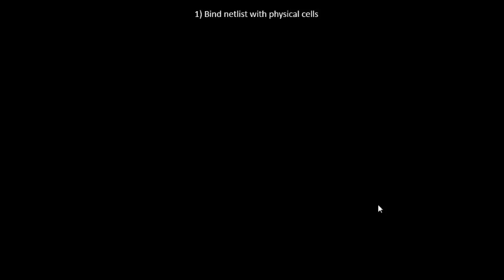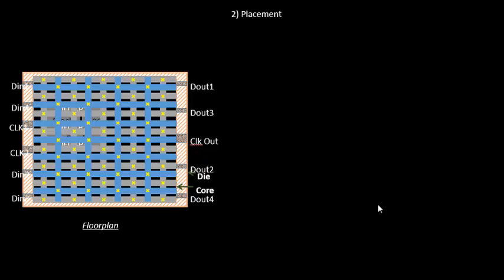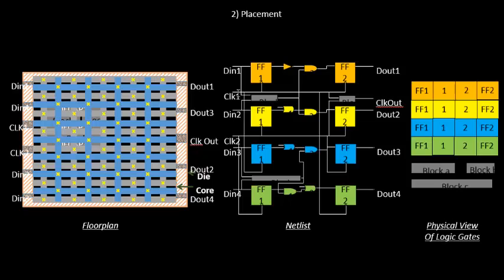Once we bind the cells with physical shapes, the next step is placement. Before placement, let's see what we have: the floor plan with all pin locations defined and all pre-placed cells in position. The term pre-placed cells makes more sense now — those are cells placed before the placement step. We have the netlist and the physical view of each logic gate from the library, and we need to place these cells onto the floor plan.